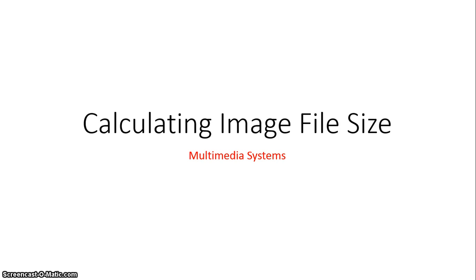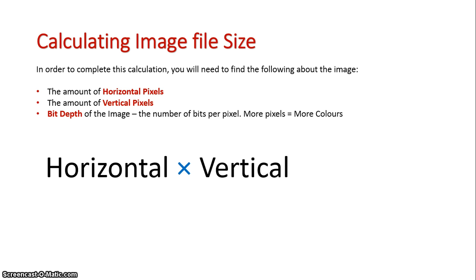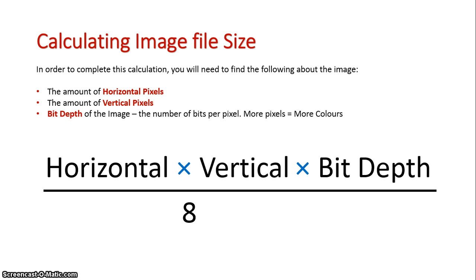We are now going to look at how to calculate the file size of an image. We need to look at what values to take into account using our formula. We first need to establish how many horizontal pixels there are and multiply that by the amount of vertical pixels. We then need to know how many colors are being used, which is referred to as the bit depth. Once we know those three values, we divide all of that by 8 times 1024, which brings our value into a kilobyte format.